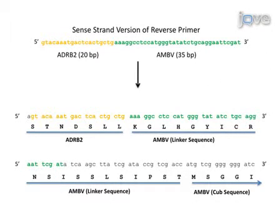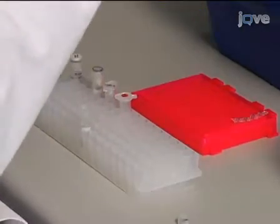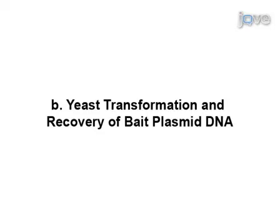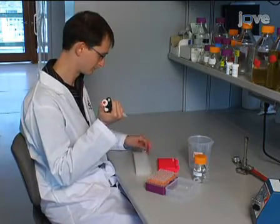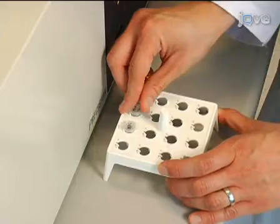Depending upon whether N- or C-terminal tagging is being performed, ensure that the selected 35 to 40 nucleotides of plasmid sequence used in the forward or reverse primer result in the target gene being cloned in-frame with the CUB-LexA-VP16 tag. Since in our example the C-terminus of the ADRB2 protein will be tagged, the 35 bases of AMBV sequence in the reverse primer have been selected such that the ADRB2 and CUB gene sequences lie within the same reading frame. Amplify the gene of interest by PCR using the selected primers; the PCR parameters will depend upon the particular enzyme and specific primers used. To provide an environment for gap repair homologous recombination, the previously digested plasmid and the amplified gene of interest are transformed into an appropriate yeast strain using a standard yeast transformation protocol such as that described by Gietz and Woods.